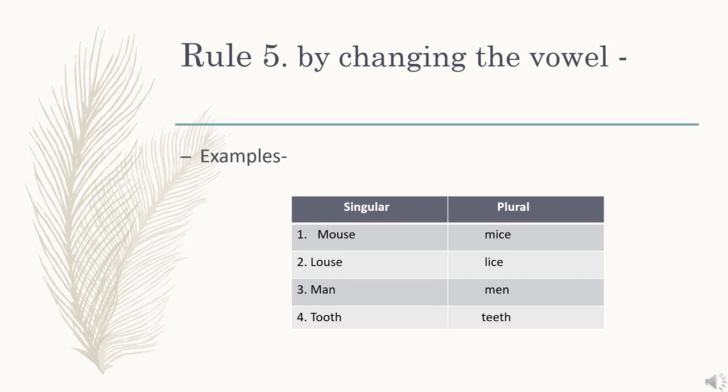Rule number 5: by changing the plural form. According to this rule, we change the vowel in some words to make their plural form. For example: mouse becomes mice, louse becomes lice, man becomes men, tooth becomes teeth, and goose becomes geese.